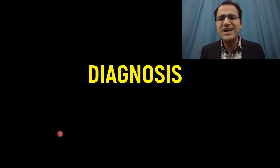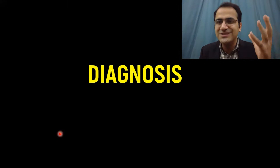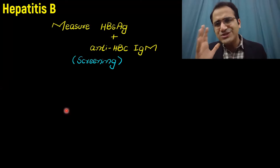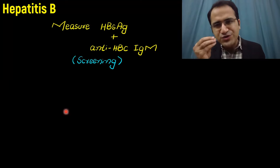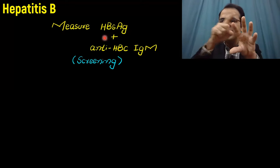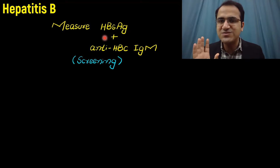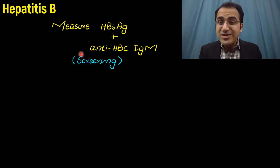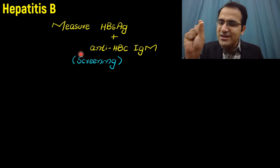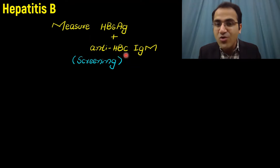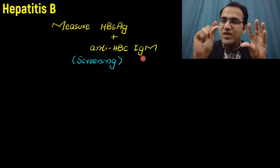Diagnosis of hepatitis B virus is based on serology. When screening a patient, you test for hepatitis B surface antigen — an antigen on the surface of the virus. If positive, the patient has a hepatitis B infection. You also detect anti-hepatitis B core IgM, an antibody against the core of the hepatitis B virus, in the patient's blood.